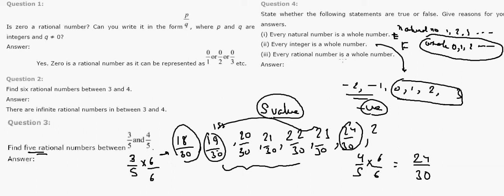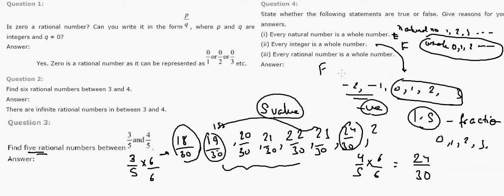Third statement: every rational number is a whole number. A rational number can be a fraction or decimal like 1.5, which is not a whole number. Whole numbers are only 0, 1, 2, 3, and so on. Hence this statement is also FALSE. If you like the video, please like and subscribe. Thank you for watching.